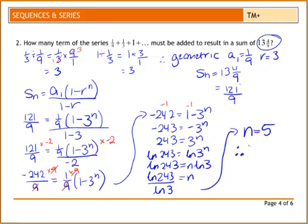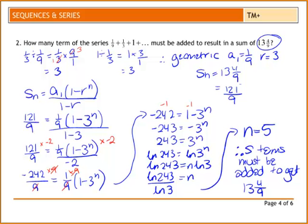Finish with a therefore statement. So you've got 5 terms must be added to get 13 and 4 ninths. I'm going to highlight that since I've gone everywhere. Please remember to work down your page. Don't do what I'm doing. It's mainly just so you can see everything on a page.